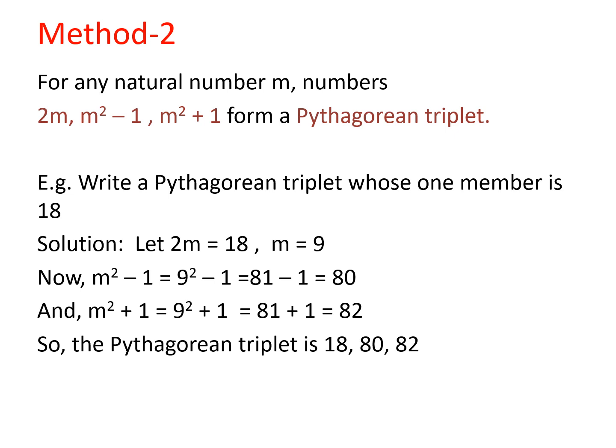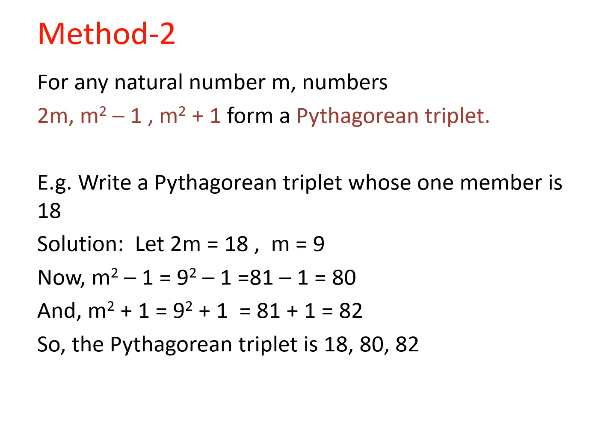Next important thing is how to create or learn the triplets. From one triplet you can create many triplets. Suppose we have (3, 4, 5) which is representing the ratios of the side lengths that satisfy the Pythagorean theorem, or we have one triplet as (3, 4, 5).